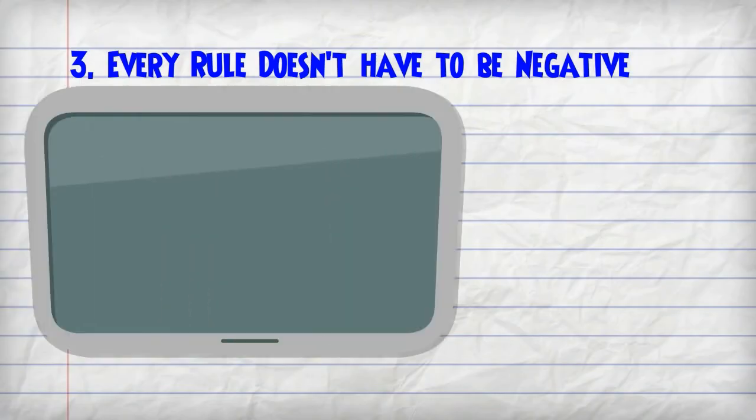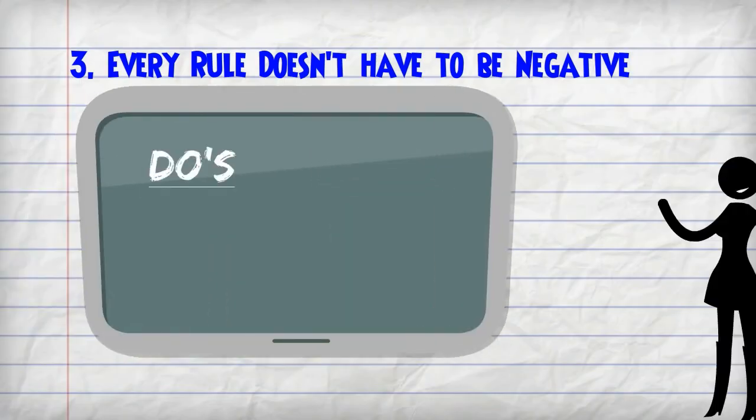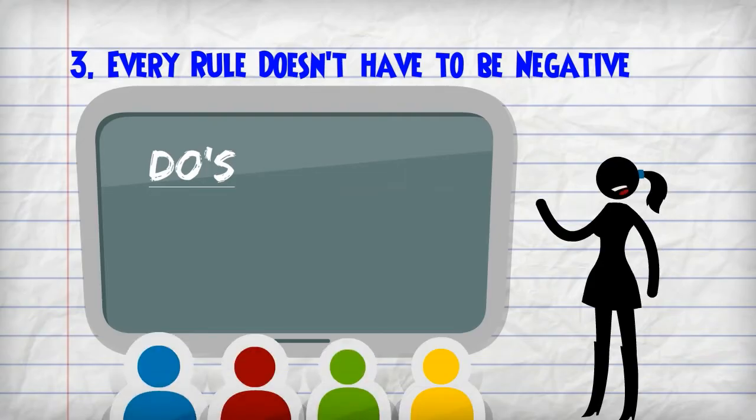The third rule is every rule doesn't have to be negative. The classroom is full of do's and don'ts, not just don'ts. Encourage them to do positive things and stay away from the negative. So encourage the students to make mistakes and to have fun.